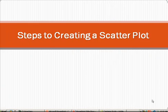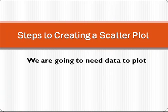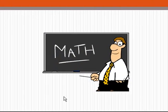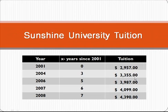Good afternoon, class. Today we're going to be talking about steps to creating a scatter plot. Before we can actually create the scatter plot, we're going to need data to plot. So let's take a look at the cost of attending Sunshine University over the last couple of years — you're going to attend as a math major. The following table shows the cost of attending Sunshine University over the various years. You can see in 2001, the cost was $2,957, and so forth.